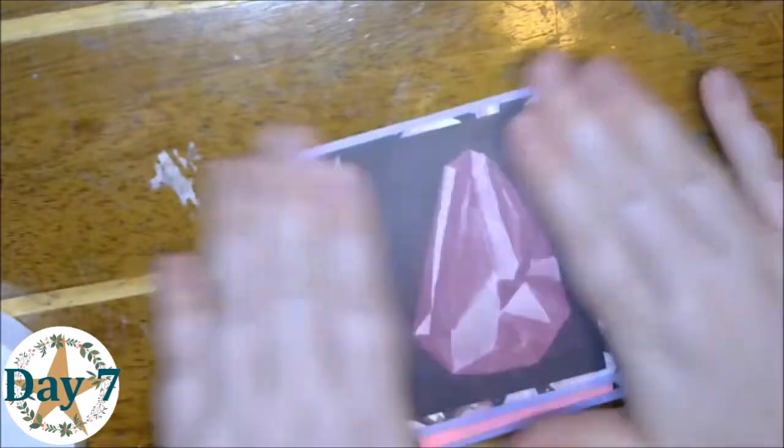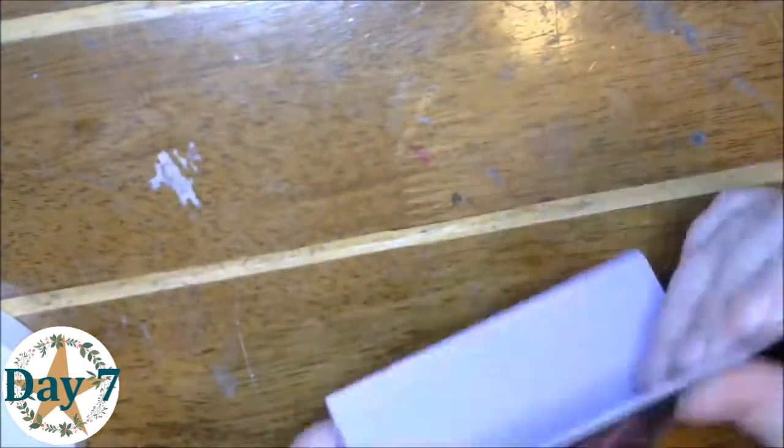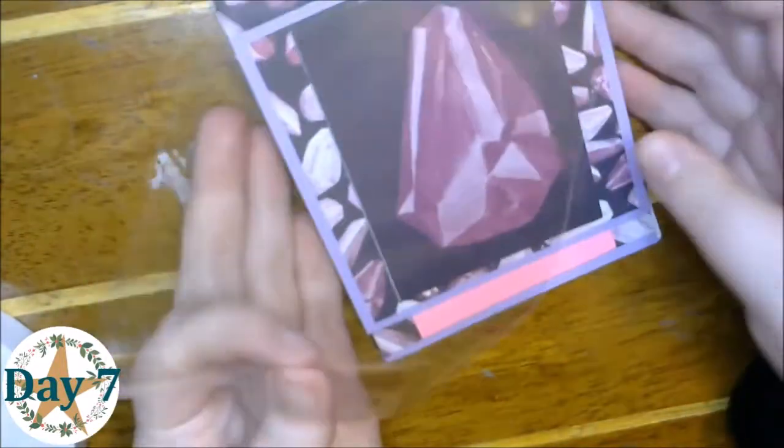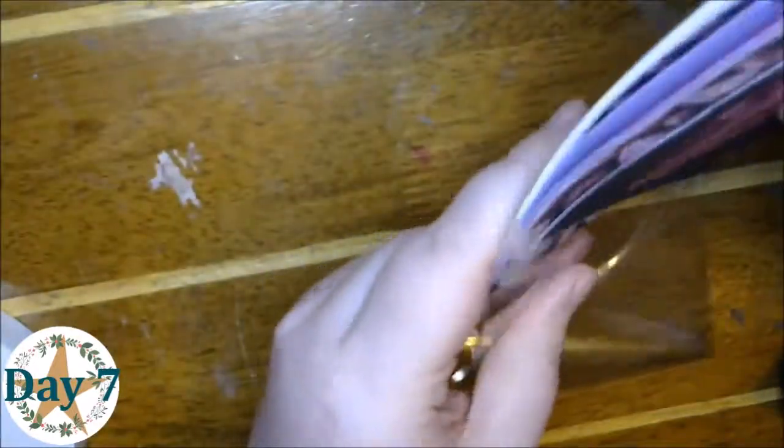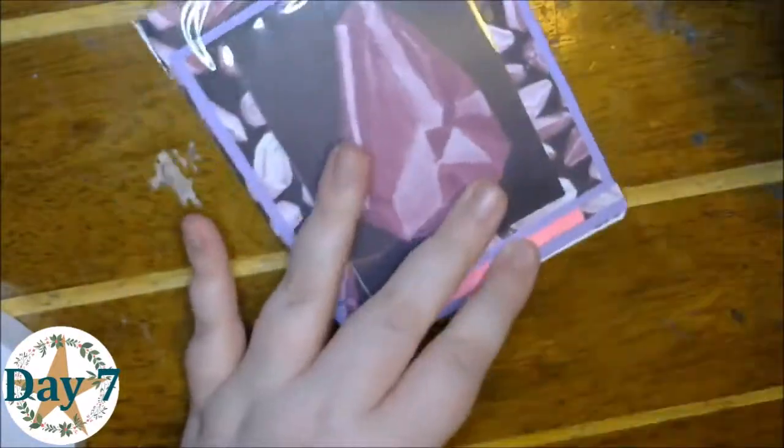So that really normally you would put like a flower or a button or something there so that it would stop your easel from closing. So this is the post-it note version. It's going to actually stop it, you don't have to add anything else.